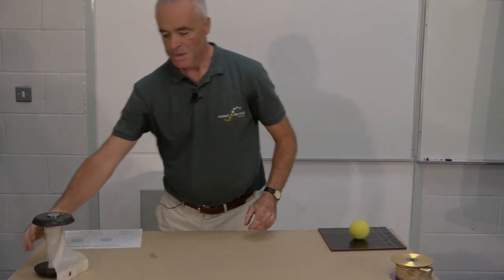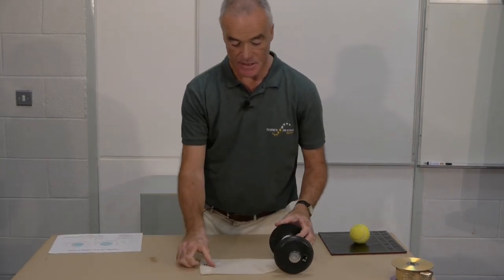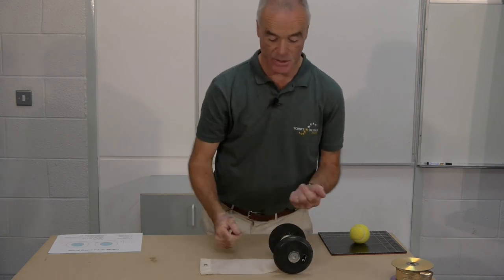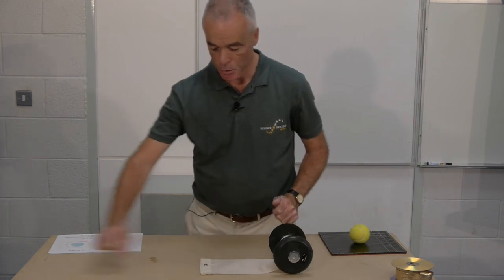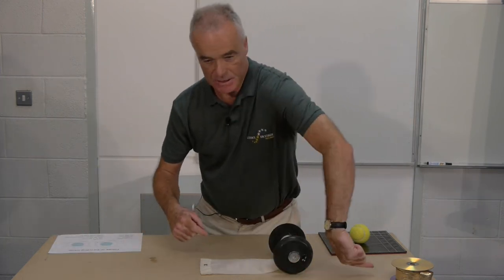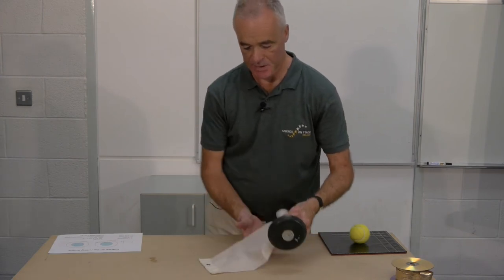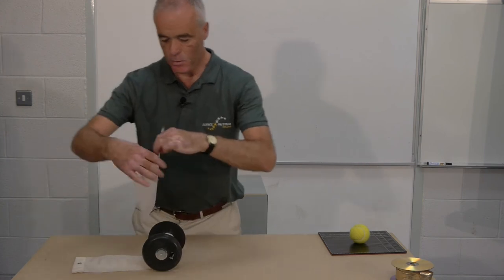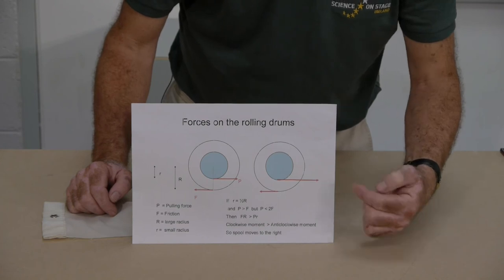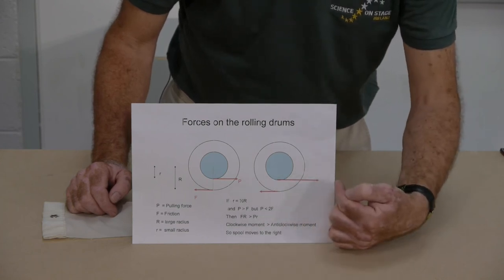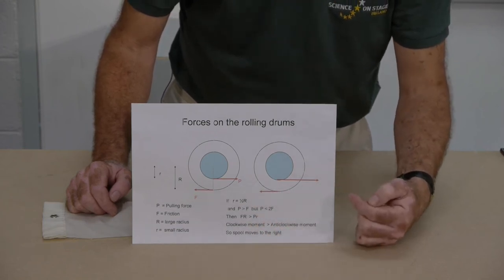Well, there are forces at work in this situation. There is obviously the weight of the dumbbell downwards and a reaction force upwards. But in terms of the motion of the dumbbell, it's the pulling force and the friction acting against it that compete and determine ultimately what happens. In a force diagram, a pair of red arrows represent the forces at work: the red arrow acting to the right is the pulling force P, and the red arrow to the left is the friction force F.